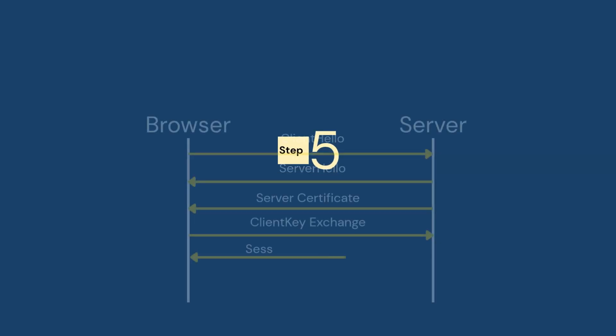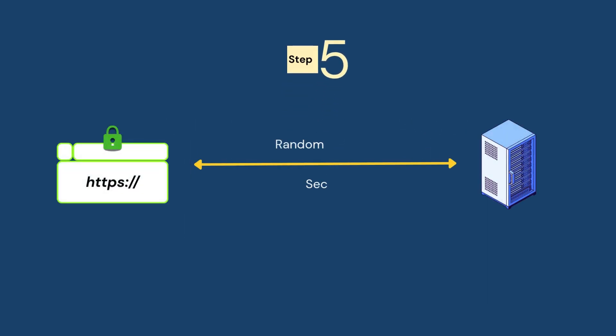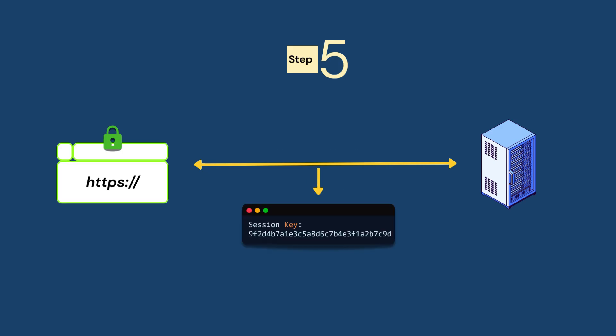Step number five: now both sides generate the final key. Using the random numbers and the secret sent, both sides calculate the exact same session key. This will be used to encrypt all future messages. Now they both have the same symmetric key.